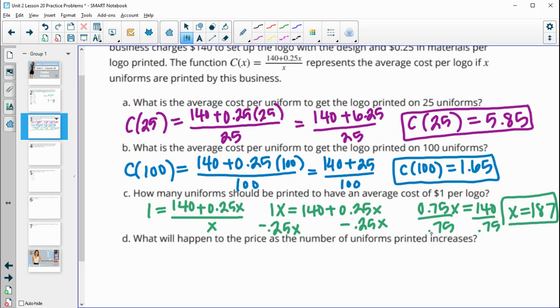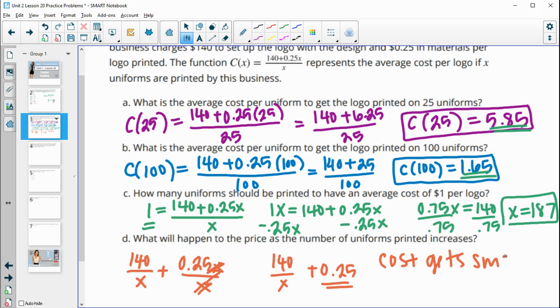And then what will happen to the price as the number of uniforms printed increases? So we're saying what's happening to this cost and now it's going down to a dollar. If we take a look at this equation, that's really talking about the end behavior. So if I take 140 divided by X plus I take the 0.25X divided by X, those X's will cancel. So the end behavior here, as we make more and more shirts, is going towards 25 cents. So as we make more and more shirts, this $140 setup fee kind of gets absorbed, and so your cost gets smaller and smaller and ultimately closer to 25 cents per uniform.